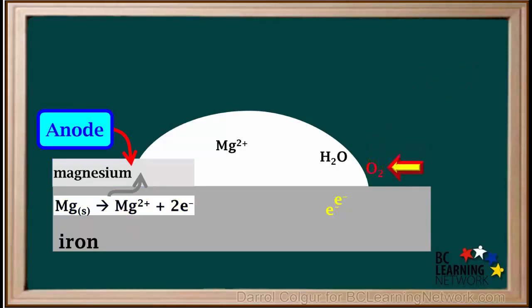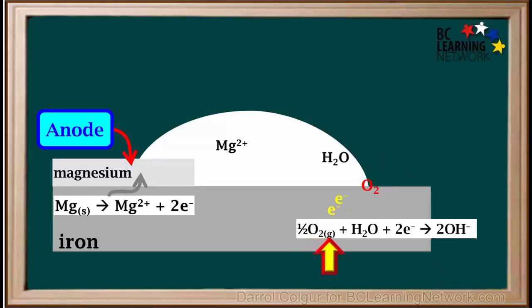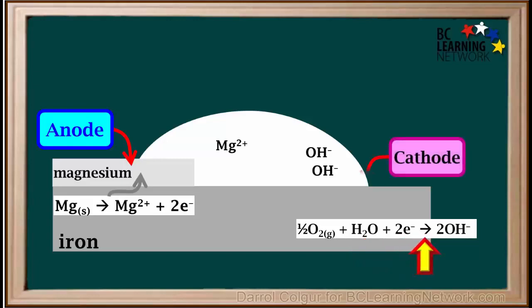Oxygen from the air will move to the spot where the iron metal, the water and air all meet. Oxygen in the presence of water will gain the electrons lost by the magnesium and undergo reduction to form hydroxide ions. The hydroxide ions formed will dissolve in the water. Because reduction occurs here on the iron, this is the location of the cathode.